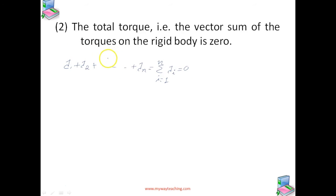We may get a doubt about whether this rotational equilibrium condition remains valid if the origin with respect to which the torques are taken is shifted. If the translational equilibrium condition holds for a rigid body, then such a shift of origin does not matter — the rotational equilibrium also holds good. It is independent of the location of the origin about which the torques are taken.